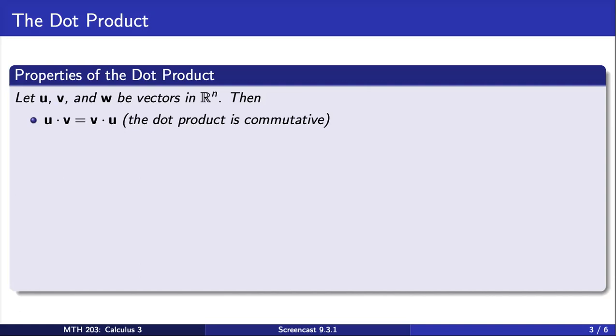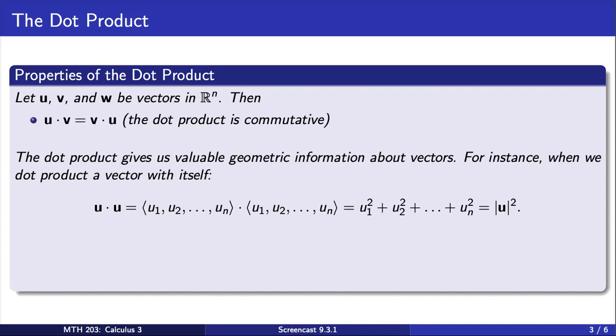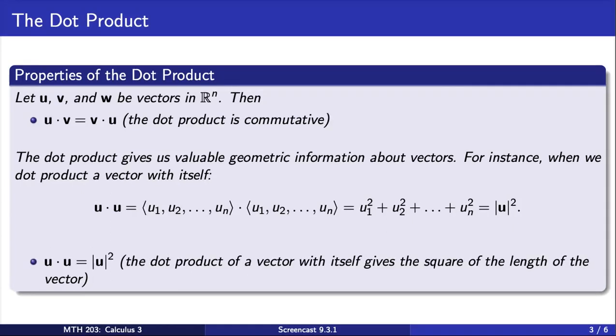Also, the dot product gives us valuable geometric information about vectors. When we dot product of vector u with itself, we see that the result can be written in terms of the length of the vector u. And this holds, in general, the dot product of a vector with itself gives the square of the length of the vector.